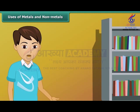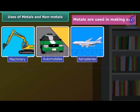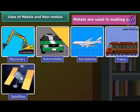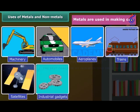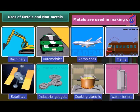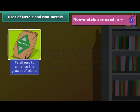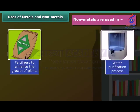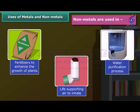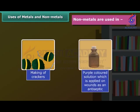As we know that metals are hard in nature, so they are used in making machinery, automobiles, aeroplanes, trains, satellites, industrial gadgets, cooking utensils, water boilers, etc. Non-metals are not so hard, so they are used in fertilizers, water purification process, life-supporting air, crackers, and purple-colored solution as an antiseptic on wounds.